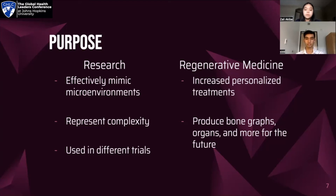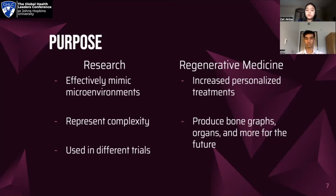The second purpose of bioprinting is for research. 3D models allow scientists to understand cell and organ functions much better than 2D and animal models. 2D models, which are currently the most common, cause many drug treatments to fail clinical trials because they do not accurately represent the cancer microenvironment. 3D models, however, can accurately represent the complexity of organ and cancer microenvironments.